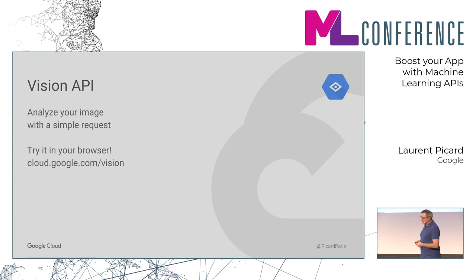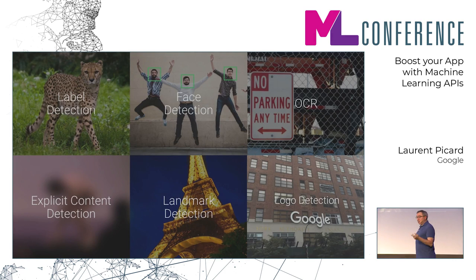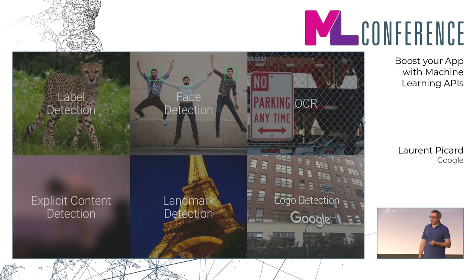Another API: the Vision API. This is my favorite one for personal reasons. As a software engineer, I learned how to make algorithms to process images — detecting edges, recognizing features by implementing code. But the Vision API is purely machine learning based. It's able to detect labels, faces, text, whether a picture is violent or contains specific content like medical content, and able to detect landmarks and logos.